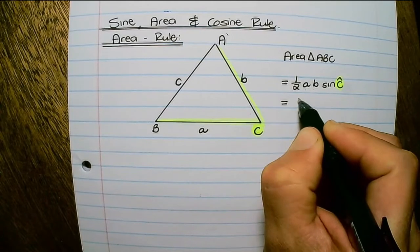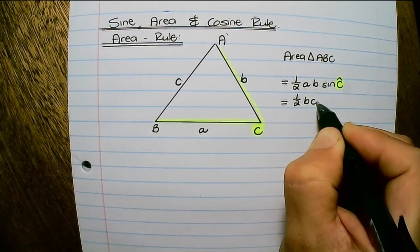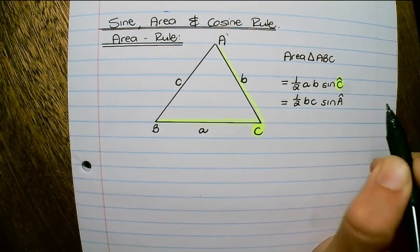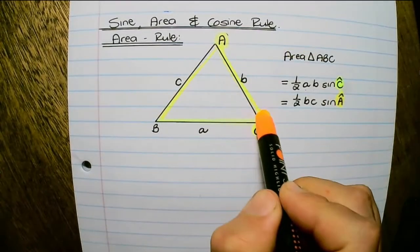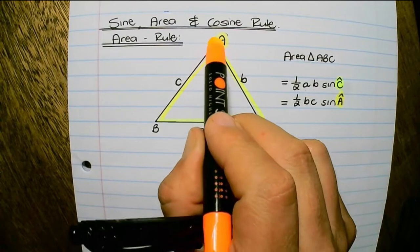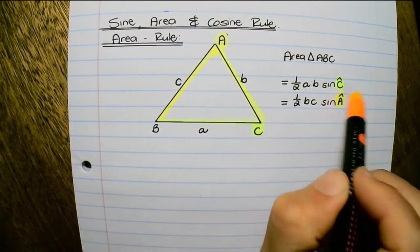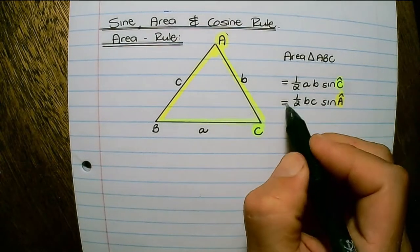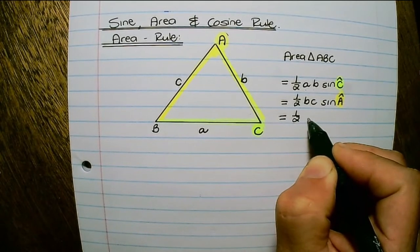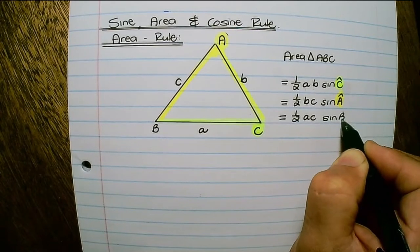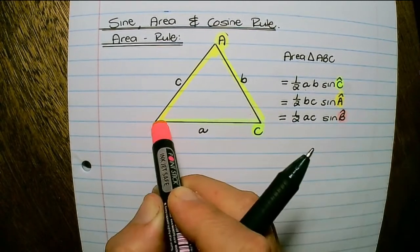Alternatively, the area of the triangle equals half BC sine of A, where angle A is the angle between the two sides considered. And thirdly we have half AC sine of B, where we are considering angle B.